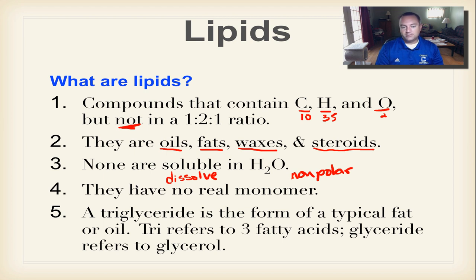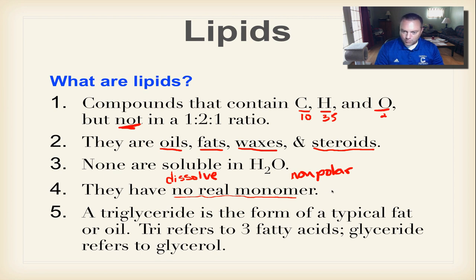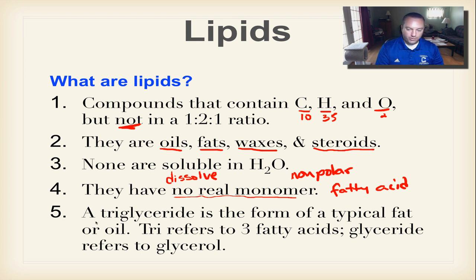The one unusual thing about lipids — and this is the only one of the four biomolecules like this — is they don't really have a true monomer. The closest thing to a monomer, especially in oils and fats, would be the fatty acid. We're going to talk about those in more detail in just a bit.